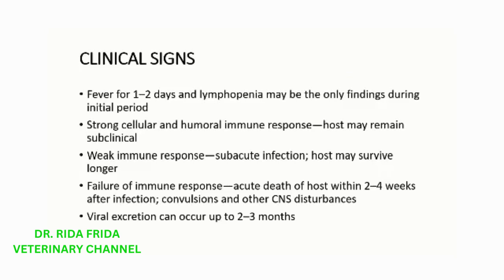Some of the major clinical signs of the disease include fever for 1-2 days and lymphopenia. These may be the only findings during the initial period of the disease. Further disease progression depends on the virus strain and the host's immune response. If there is a strong cellular and humoral immune response, the host may remain subclinical.